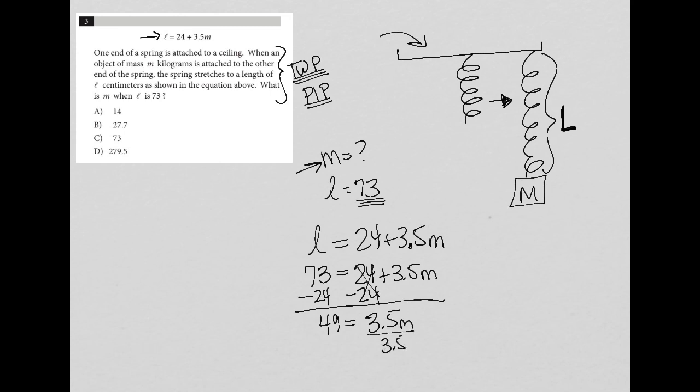And then we divide both sides by 3.5. You can go to your calculator, type in your 49 divided by 3.5. And what you will find is that M is equal to 14, which makes our final answer here, choice A.